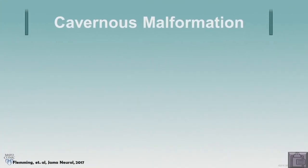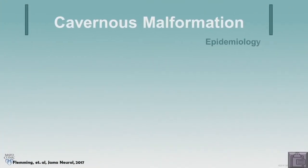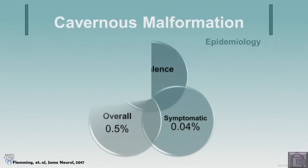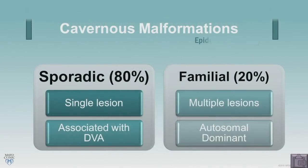How common are these? About 1 in 200 people have them, but only 1 in 10 of those will actually have symptoms. They occur in two forms: one is the sporadic form, the most common, and the other is the familial or genetic form.